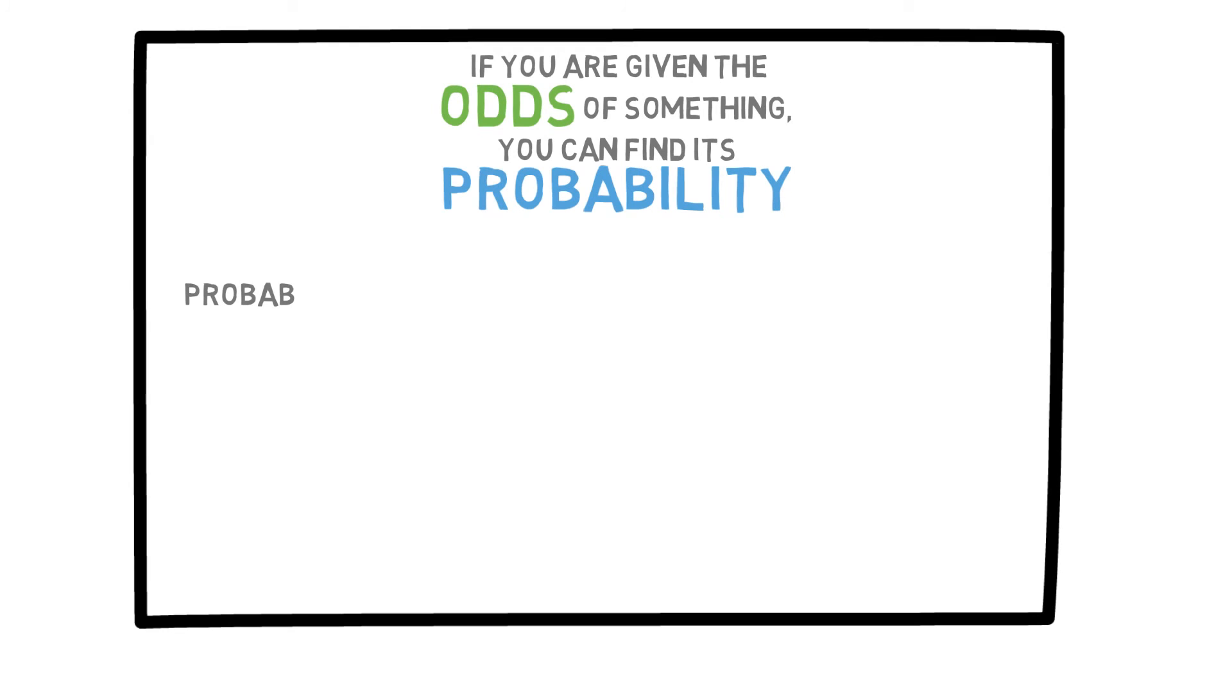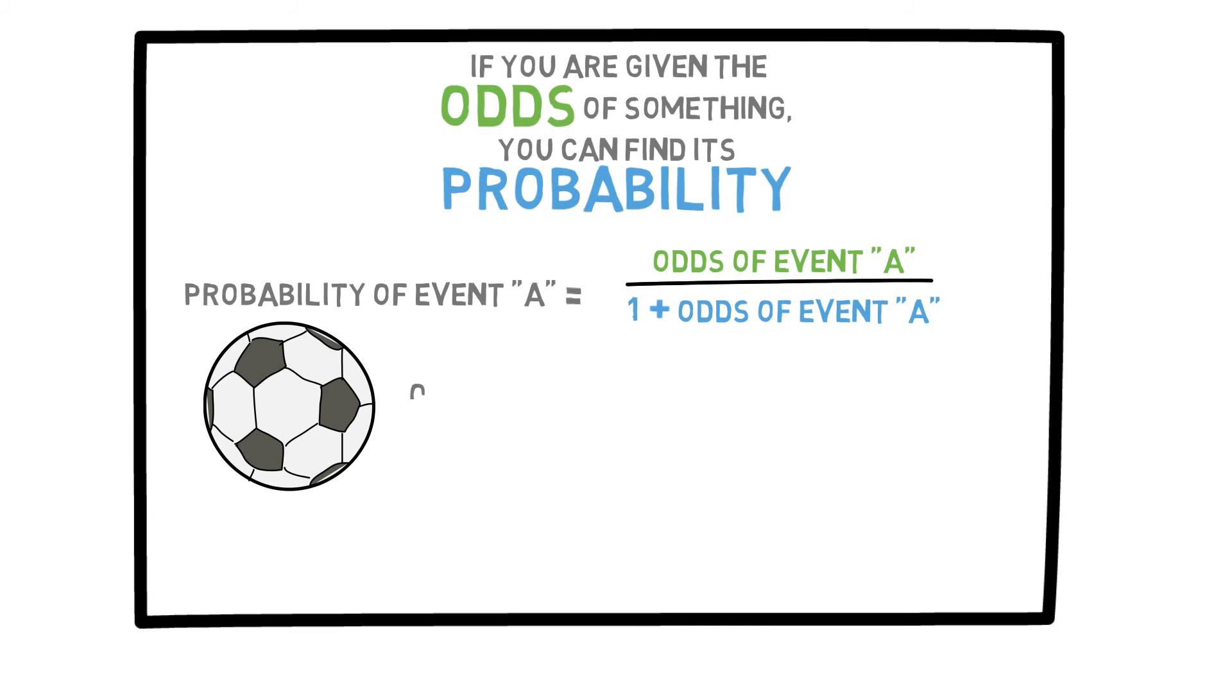Furthermore, if you are given the odds of something, you can find its probability with this simple formula. The probability of event A is just the odds of event A divided by one plus the odds of A. As a simple example, let's say you are watching a game and it is determined that the odds of team A winning is one to two.